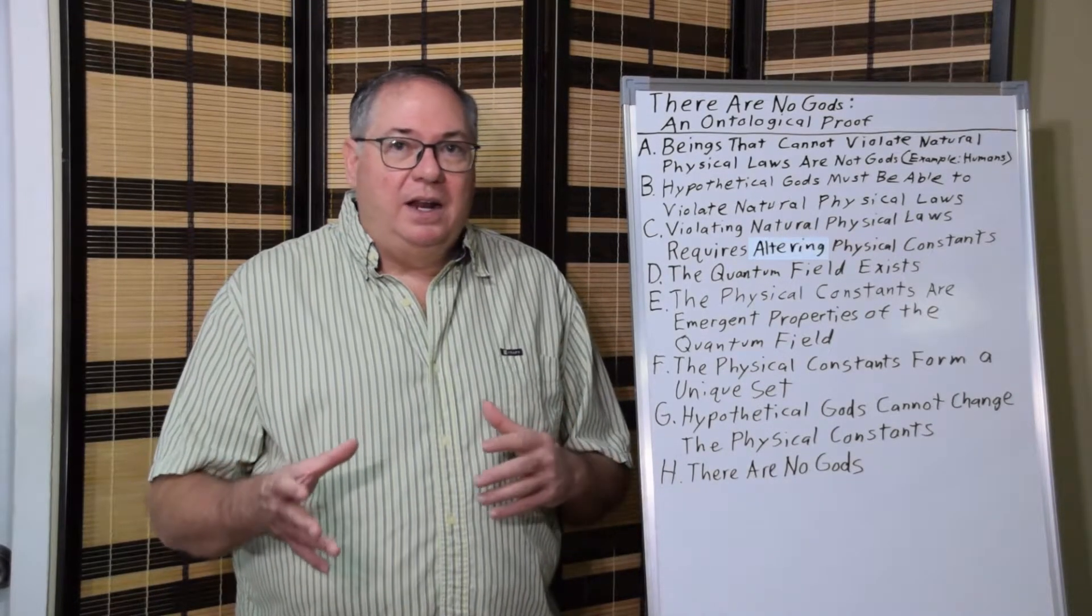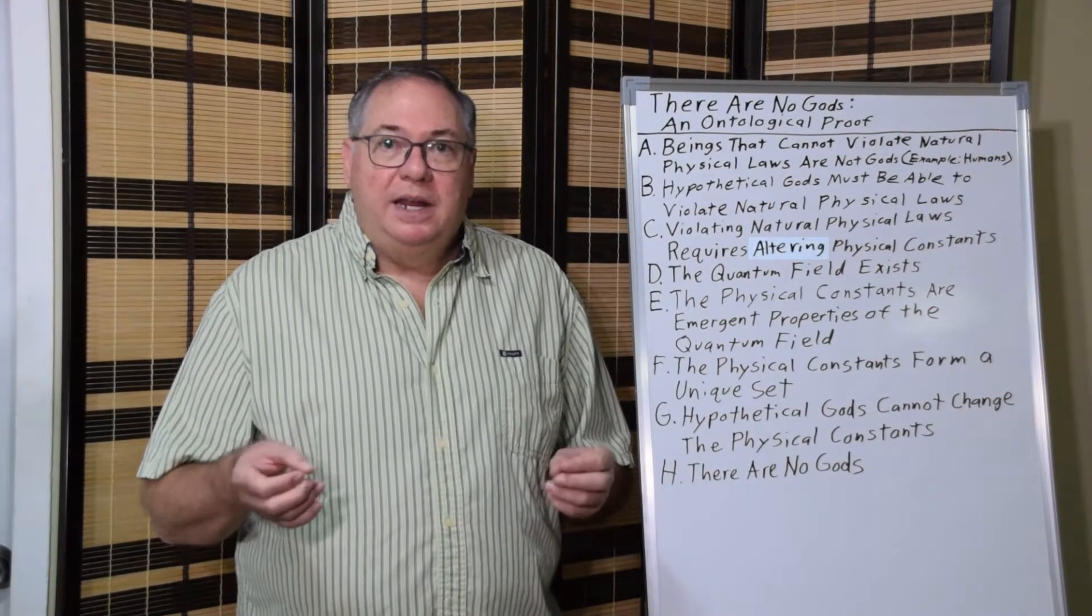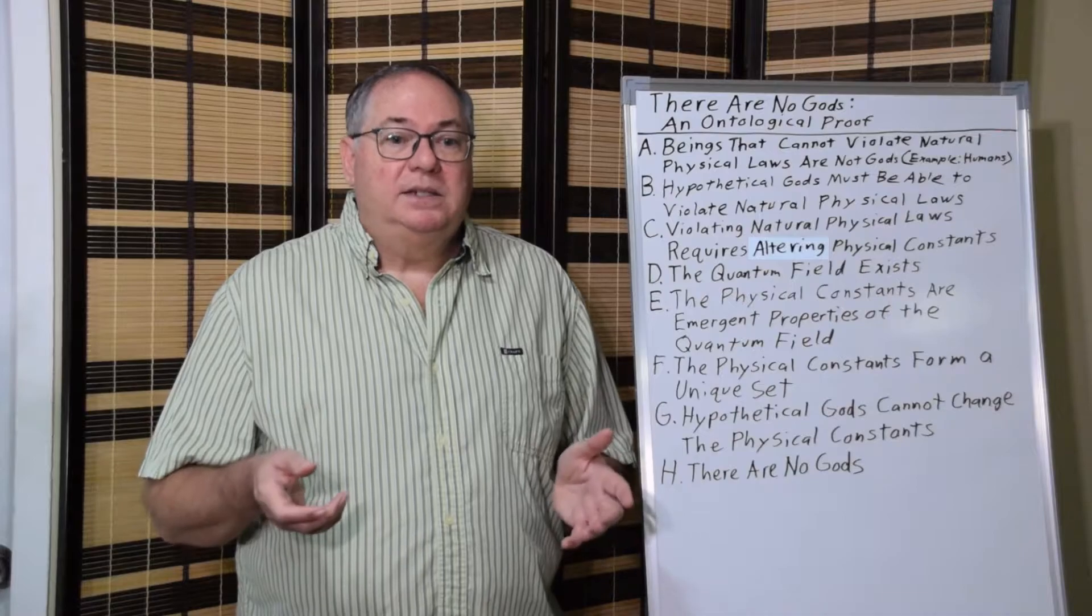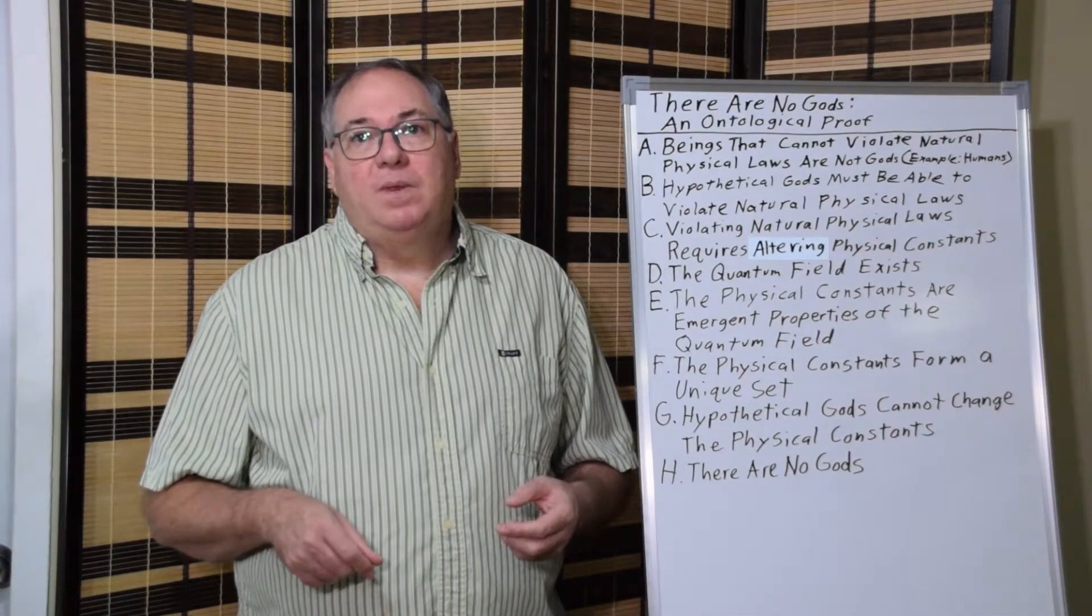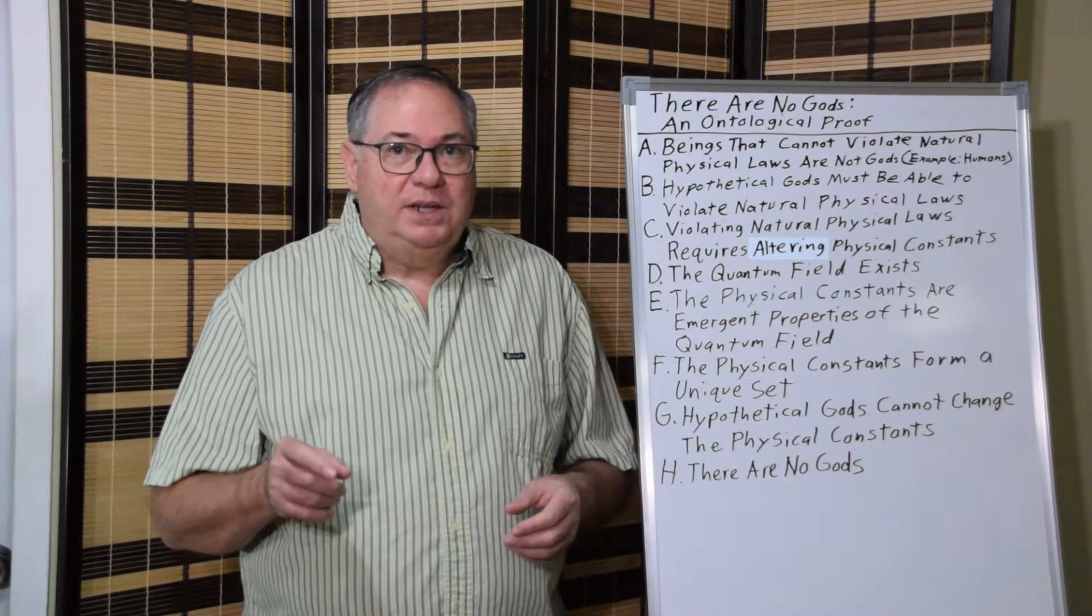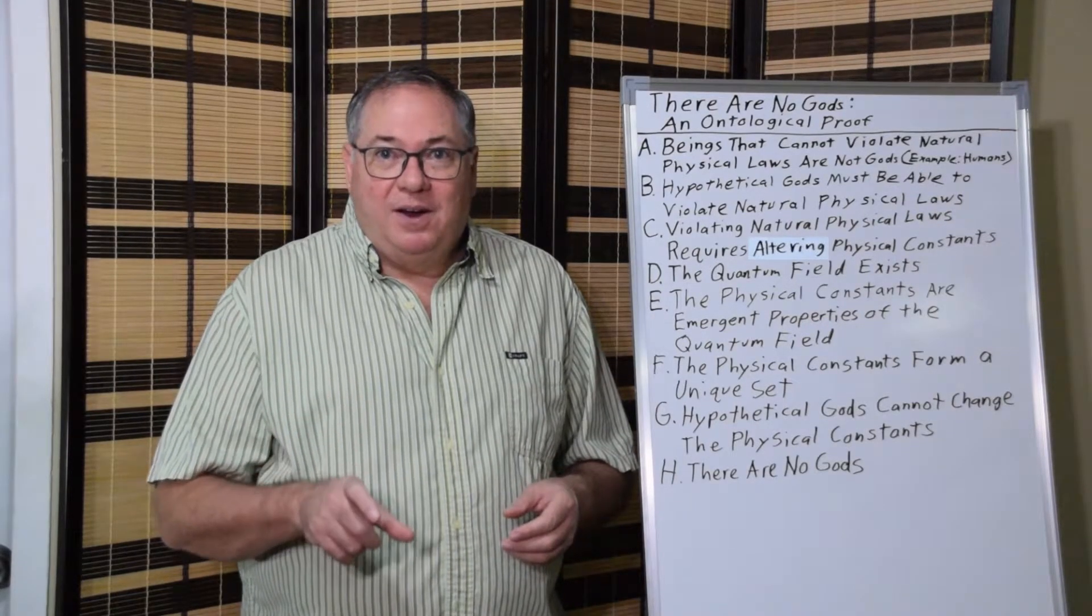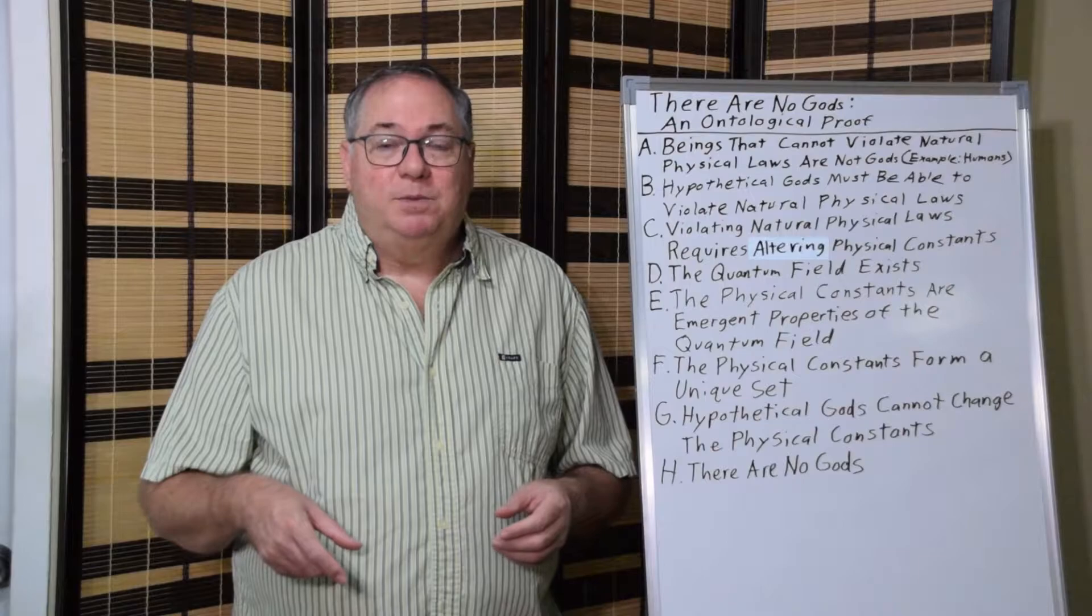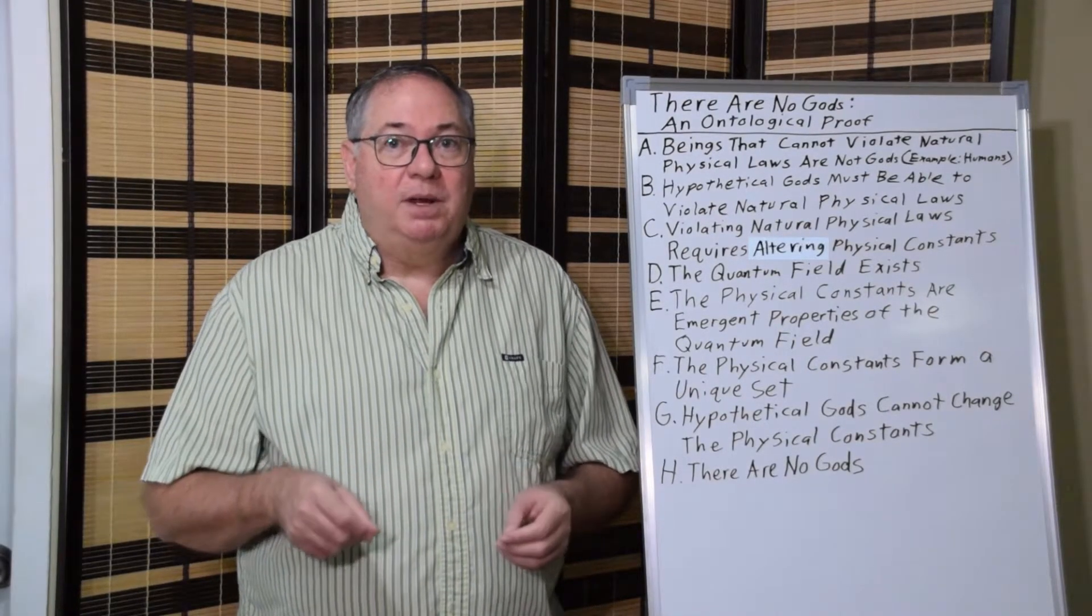And from there, we can learn a lot about what the quantum field does. And particularly, that the constants are emergent properties of the quantum field. That because we have these dipole interactions, and these quantum fluctuations have wavelengths and frequencies. Wavelengths aren't distance, and frequencies are cycles per second. So the quantum field has dimensions and time in the merge realm.